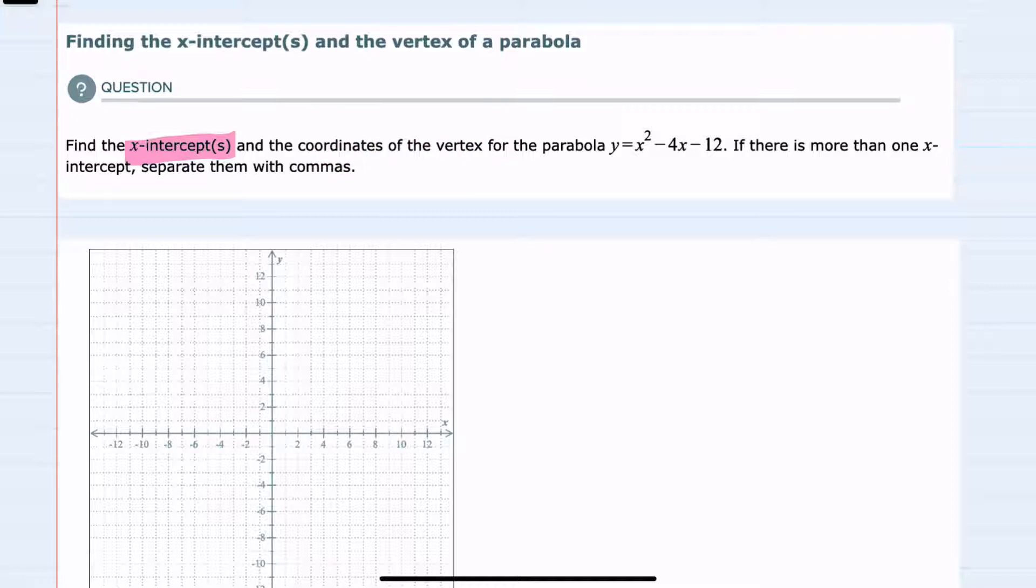I will start with the x-intercepts, and we know that the x-intercepts have a y value of 0. I added the graph here to show that this is where our graph will cross the x-axis when y equals 0.